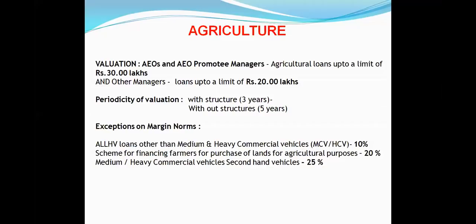Periodicity of valuation in agriculture: these are new policies. If there is a structure — like a poultry shed, feed unit, or dairy unit — you have to do revaluation every 3 years. Without any structure, for vacant site or agriculture land, up to 5 years you need not do revaluation again. Remember: structure = 3 years, no structure (vacant site) = 5 years.